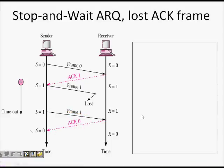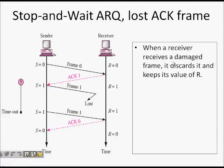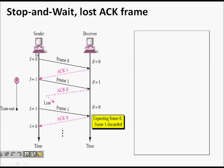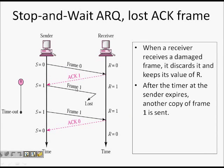When a receiver gets a damaged frame, it discards it and the value of r remains the same. It never sends a NACK. After the timeout, the sender retransmits. The sender keeps a copy of the sent frame until it receives an acknowledgement. This handles both the case where the message itself was lost and the case where the acknowledgement was lost.